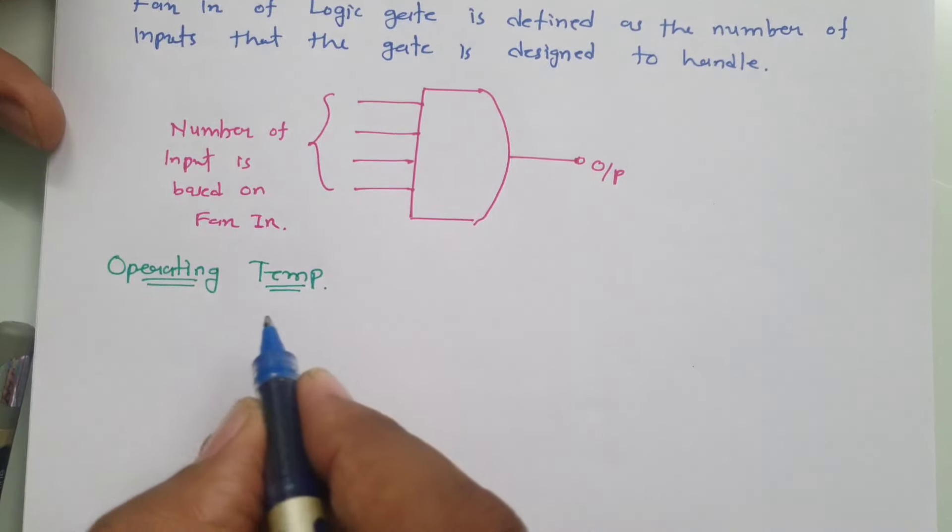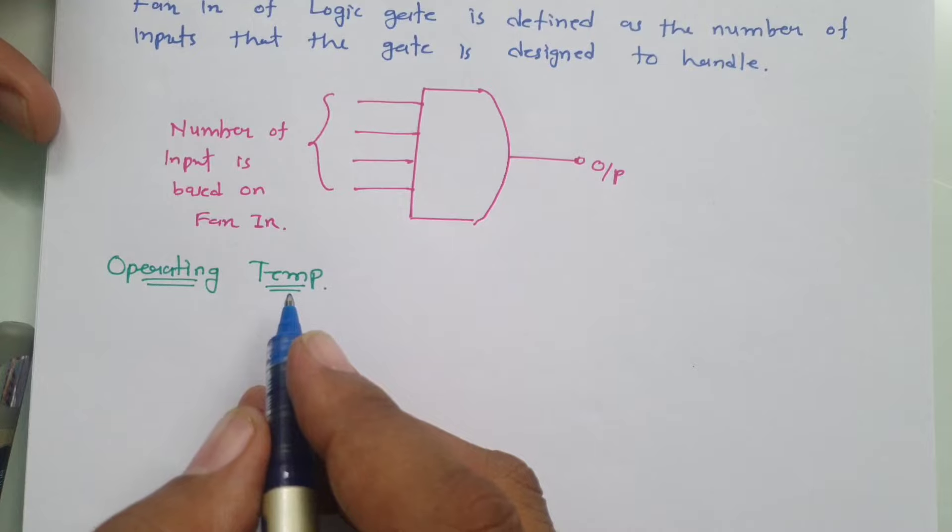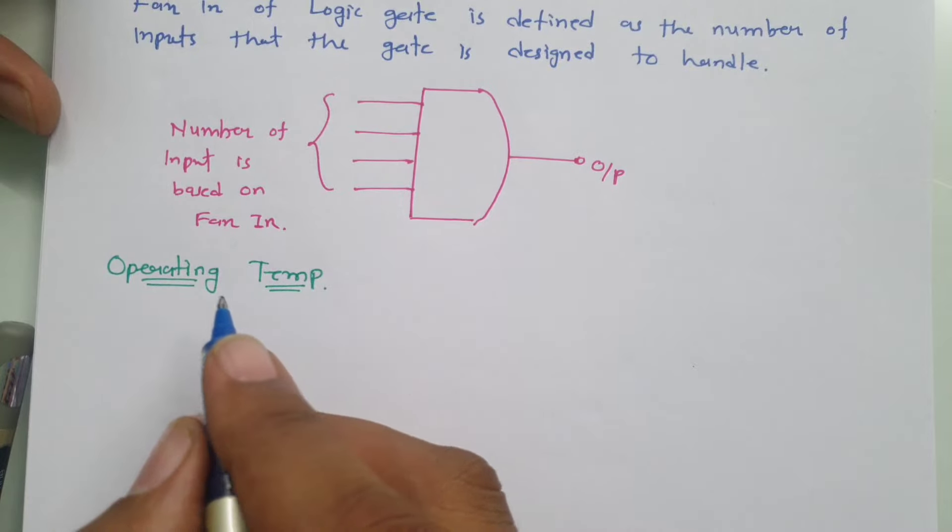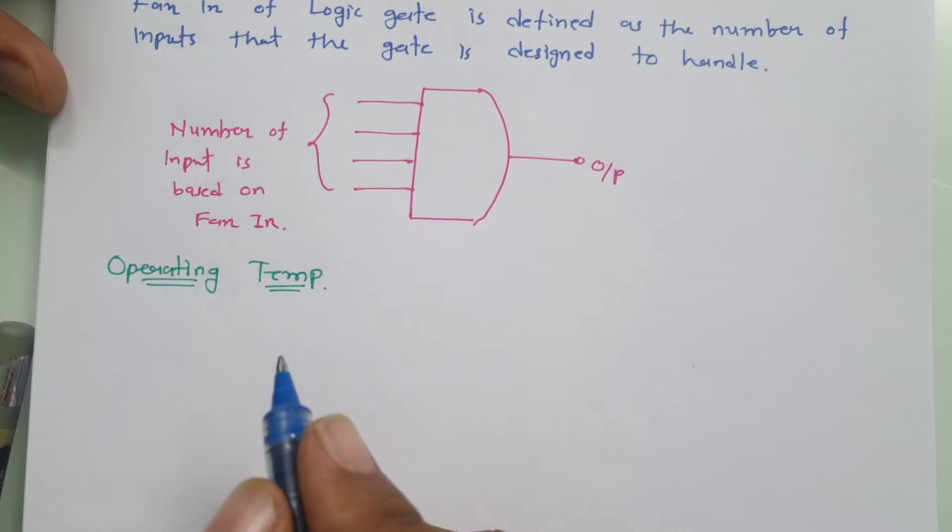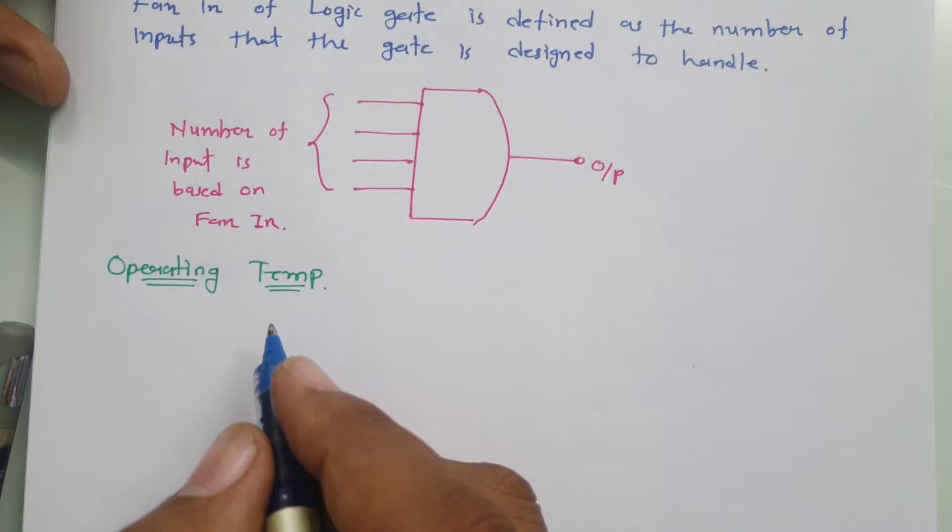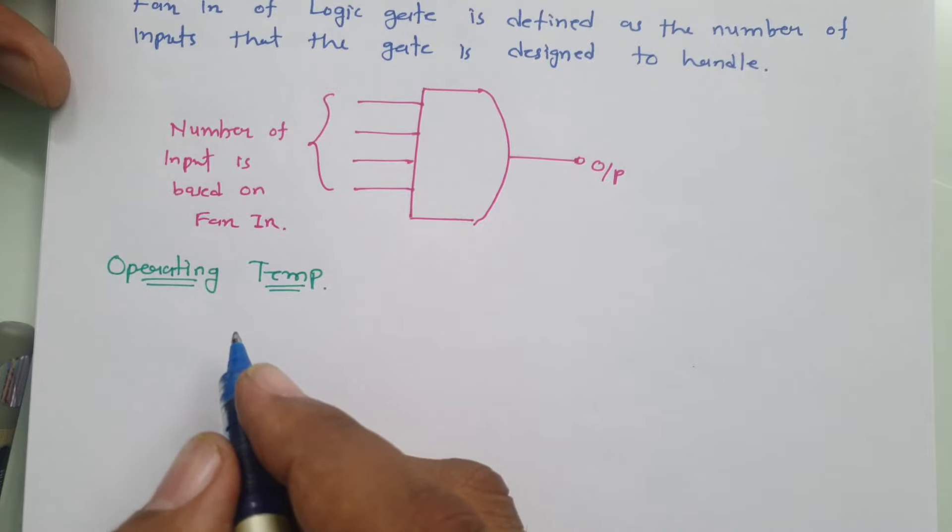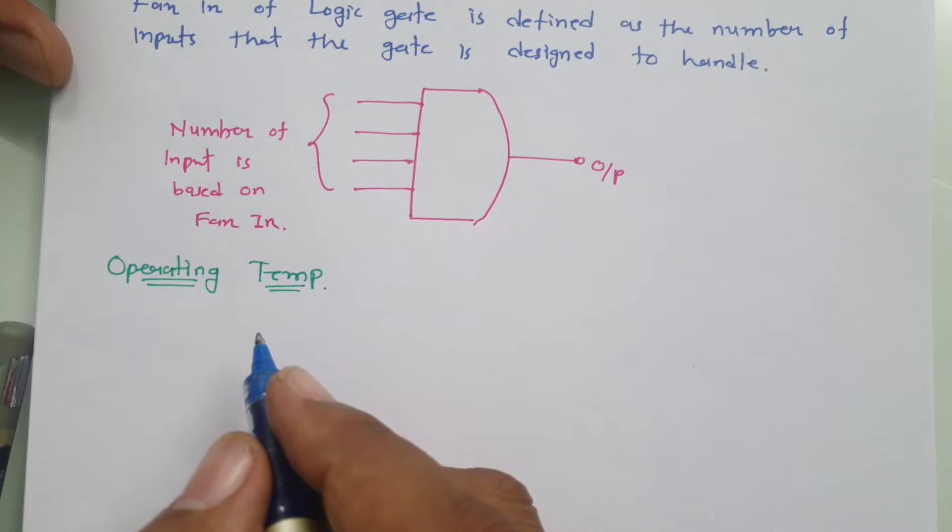This digital integrated circuit is made up of semiconductor material. And as we know, semiconductor devices are sensitive to temperature. So operating temperature is also very essential when we have different applications of digital integrated circuit. So for different applications like commercial applications, industrial applications, and military applications, temperature ranges are well defined.